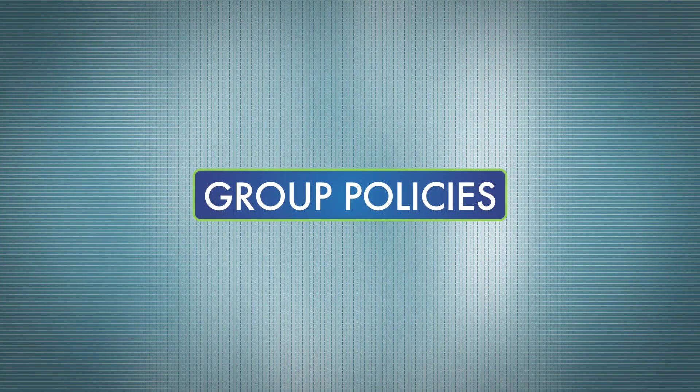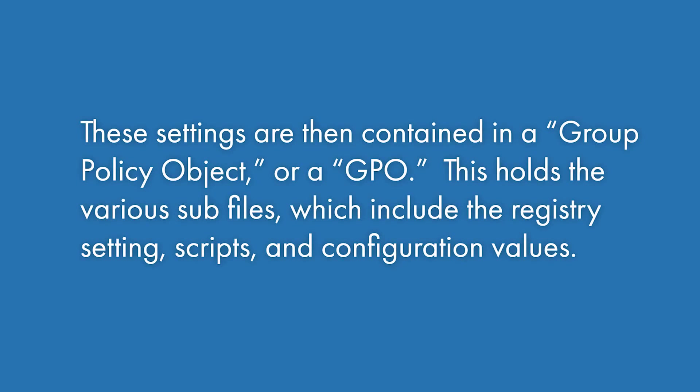A central feature of Active Directory is creating group policies. A policy can be defined as a group of configuration settings applied to either employees or computers and servers in a client-server network topology. Different settings for different objects can be made at the same time from an Active Directory domain. These settings are contained in a Group Policy Object, or GPO.